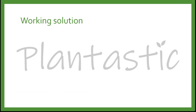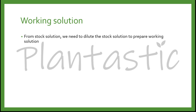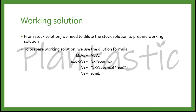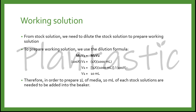We have already prepared the stock solution. Now we need to prepare the working solution from the stock solution by diluting it. To prepare the working solution, we use the dilution formula M1V1 = M2V2, where 1 indicates the stock and 2 indicates the working solution. We substitute the concentration of the stock solution into M1V1. The working solution we use is 1x. If we are preparing 1 liter, we write 1000 ml. The volume needed from the stock solution will be 10 ml after the calculation. Therefore, to prepare 1 liter of media, you need to pipette 10 ml of each stock solution at 100x concentration into the beaker.